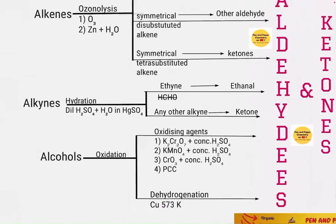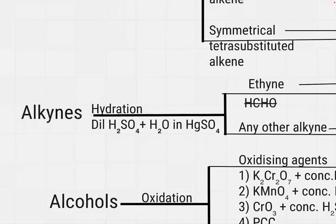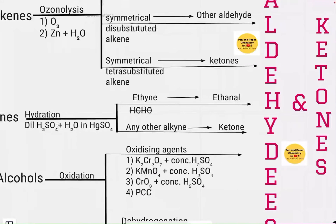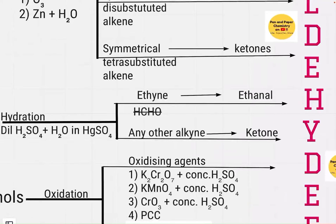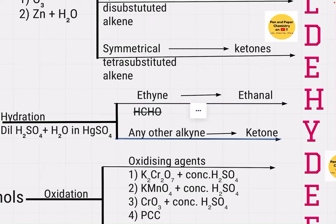The conversion of alkynes to aldehydes and ketones is done by hydration — treating with dilute H₂SO₄ in the presence of mercury sulfate. By this method, we cannot prepare methanal (HCHO), which is indicated with a strike-through on the flowchart. Any other alkyne will get converted to a ketone.